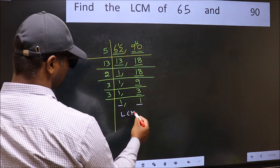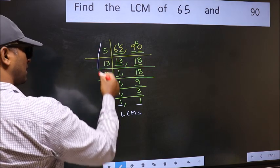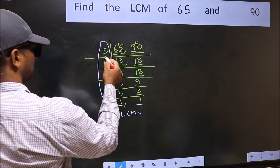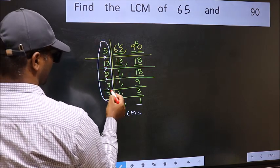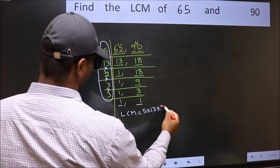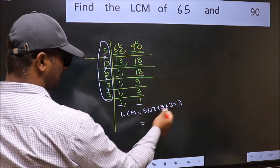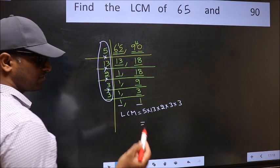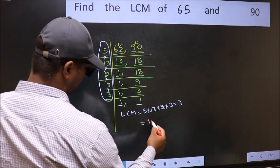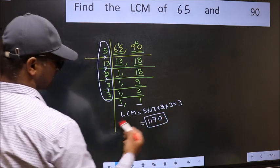So our LCM is, LCM is the product of these numbers. That is 5 into 13 into 13 into 2 into 3 into 3. When we multiply these numbers we get 1170 as our LCM.